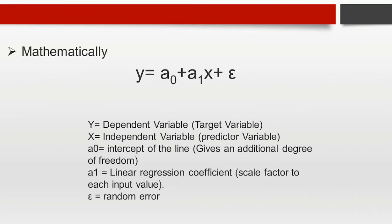Mathematically, we can represent a linear regression as: y = a0 + a1*x + random error. Here, y is the dependent variable or target variable, x is the independent variable, a0 is the intercept of the line, a1 is the linear regression coefficient, and the last term is the random error. The values of x and y are the training dataset for the linear regression model.